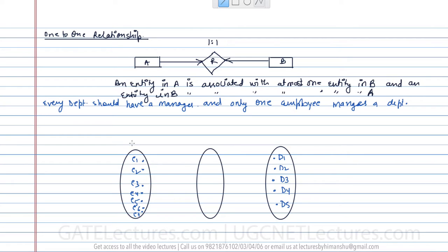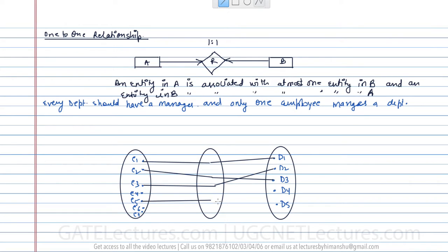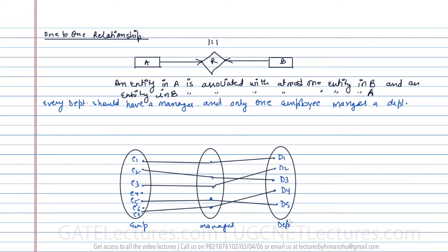'At most' means the maximum is one, but it can be less. For example, employee e1 manages department d1, e2 manages d3, e3 manages d2, and e5 manages d4. Every department has one single manager, and no department is managed by more than one employee. The entities here are employee and department, and the relationship is 'manages'.